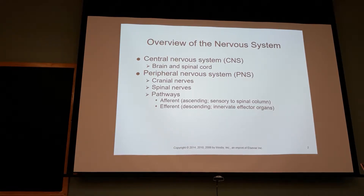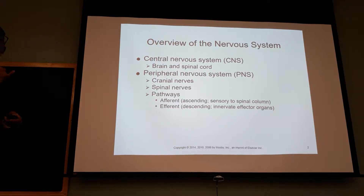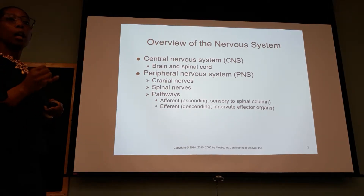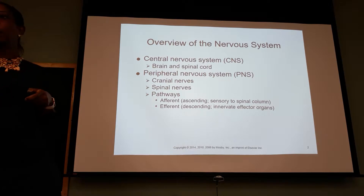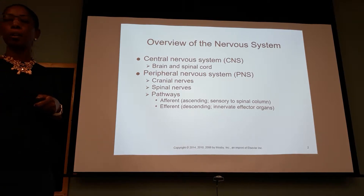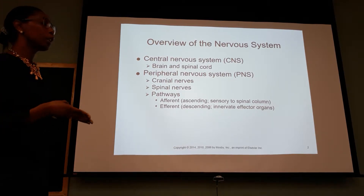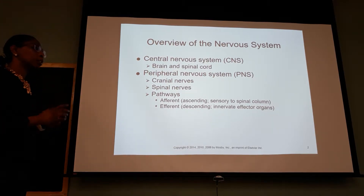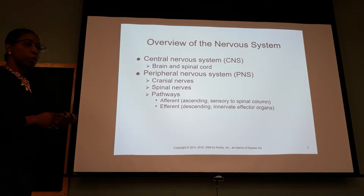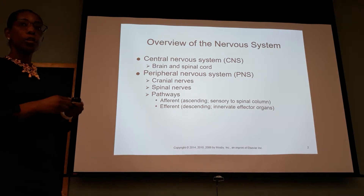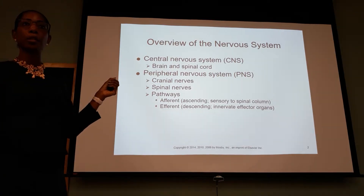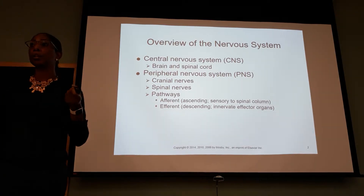So we know the brain is made up of the central nervous system, which is the brain — the cerebrum, the brainstem, the cerebellum, and the spinal cord — and the peripheral nervous system, which is the nerve roots and the cranial nerves.